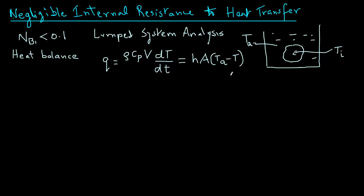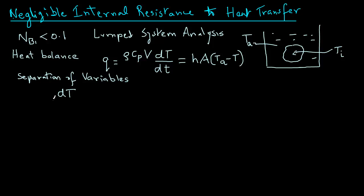Now we can solve this differential equation through very few simple steps. Recall from calculus that the way to solve differential equations is by separating variables. There are two variables here: uppercase T (temperature) and lowercase t (time). So we will rewrite this equation as dT divided by (Ta minus T) equals h A dt over rho Cp V.